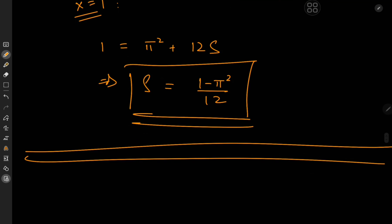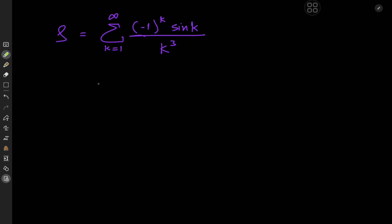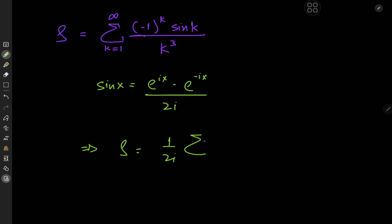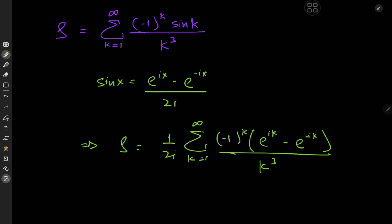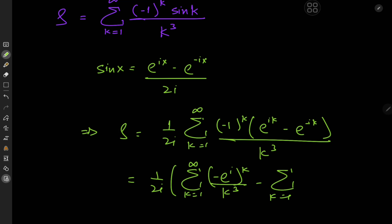That was a very cool solution — there was even a Fourier series within a Fourier series. Now for method two involving some beautiful complex analysis. We'll start by expanding the sine function using Euler's formula: sine of x equals e to the ix minus e to the negative ix divided by 2i. This implies that our sum S equals 1 over 2i times the sum over positive integers k of negative 1 to the k times e to the ik minus e to the negative ik, all divided by k³. Using linearity we split this into two separate sums.